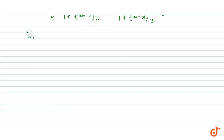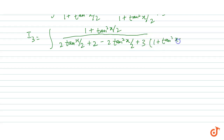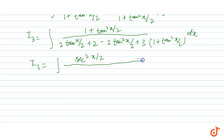After substituting, I3 becomes the integral of (1 + tan²(x/2)) divided by (2tan(x/2) minus 2tan²(x/2) + 3(1 + tan²(x/2))) dx. Simplifying the denominator, this becomes sec²(x/2) divided by (tan²(x/2) + 2tan(x/2) + 5) dx.